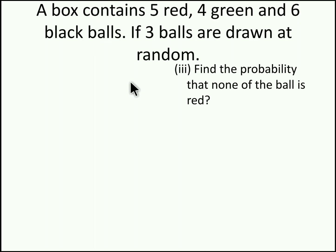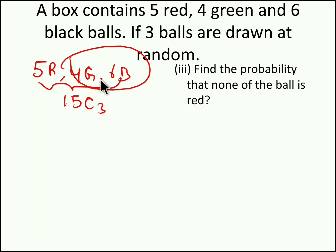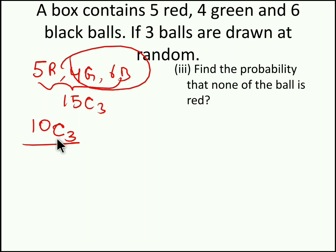Hope you understood the problem. Moving to our third question. With the same setup, find the probability that none of the balls is red. So you have to choose none of the balls red — we have 5 red, 4 green and 6 black balls. Our sample space is 15C3. Since we should not choose any red color ball, we choose 3 balls from the remaining 10 balls (6 black and 4 green). So 10C3 is our number of events and 15C3 is our sample space.